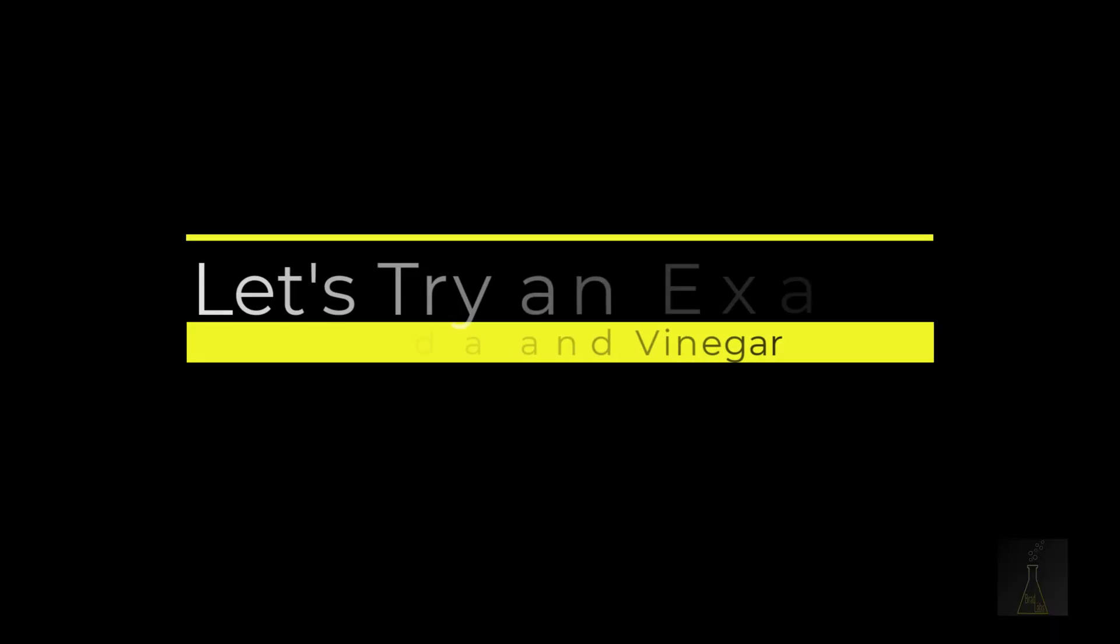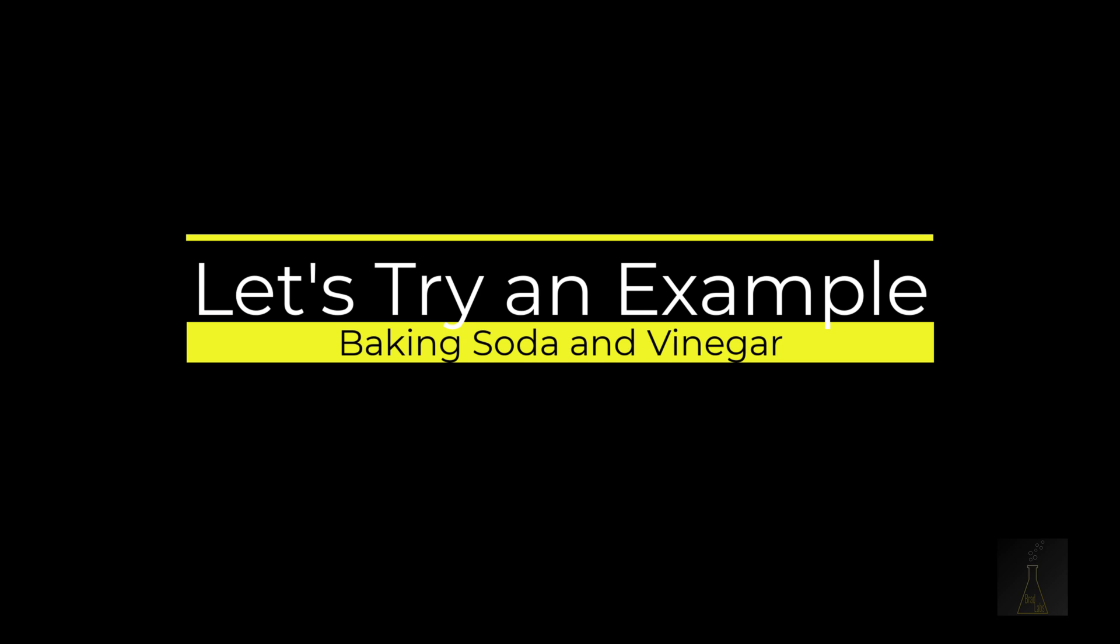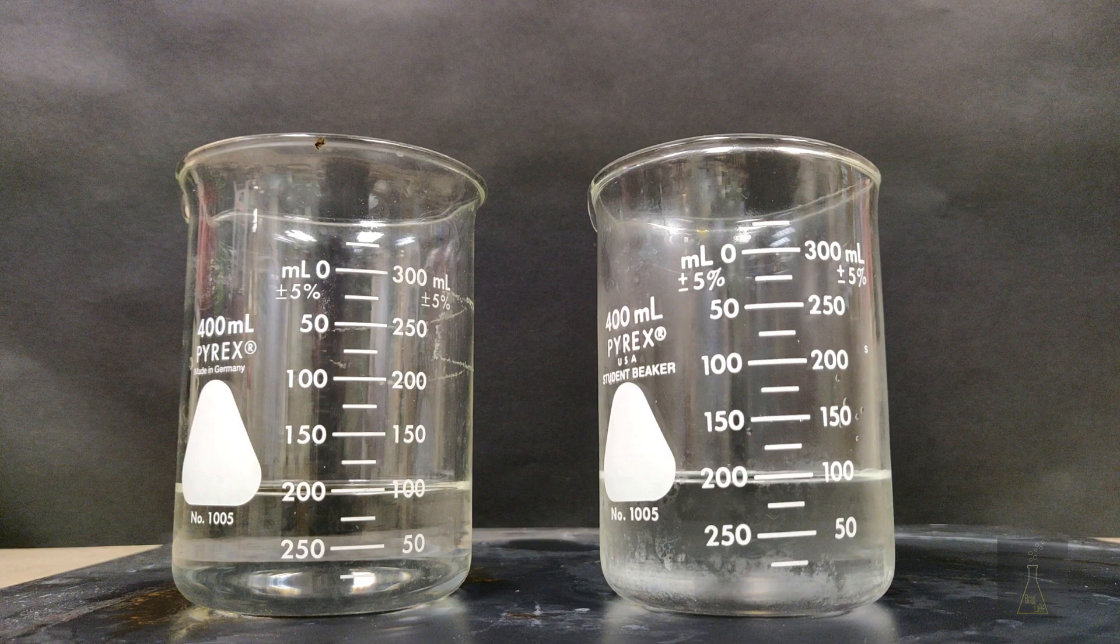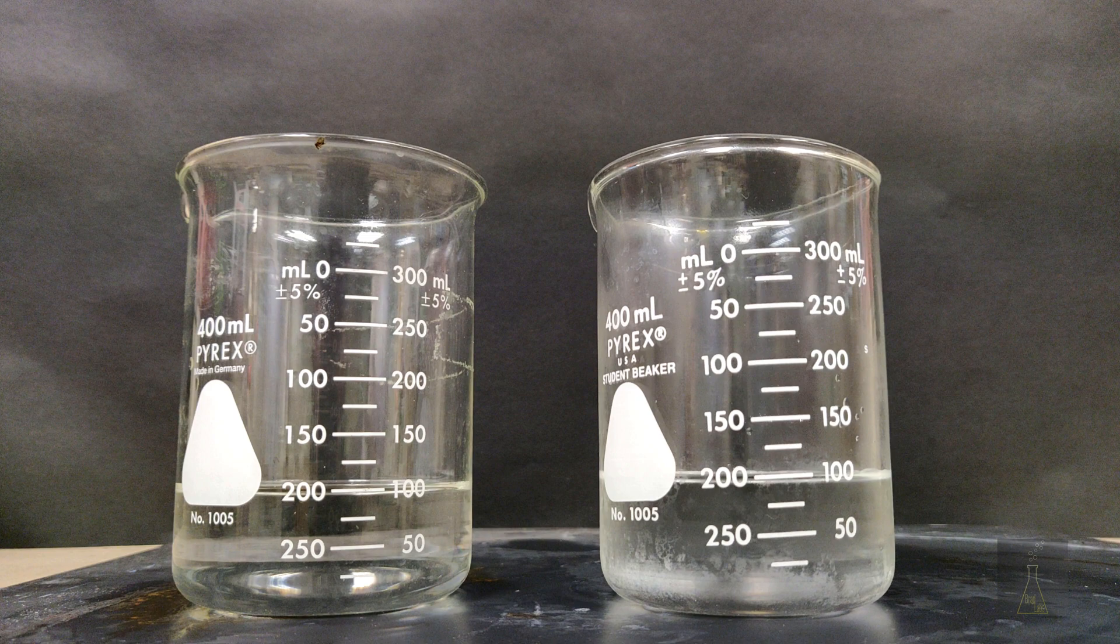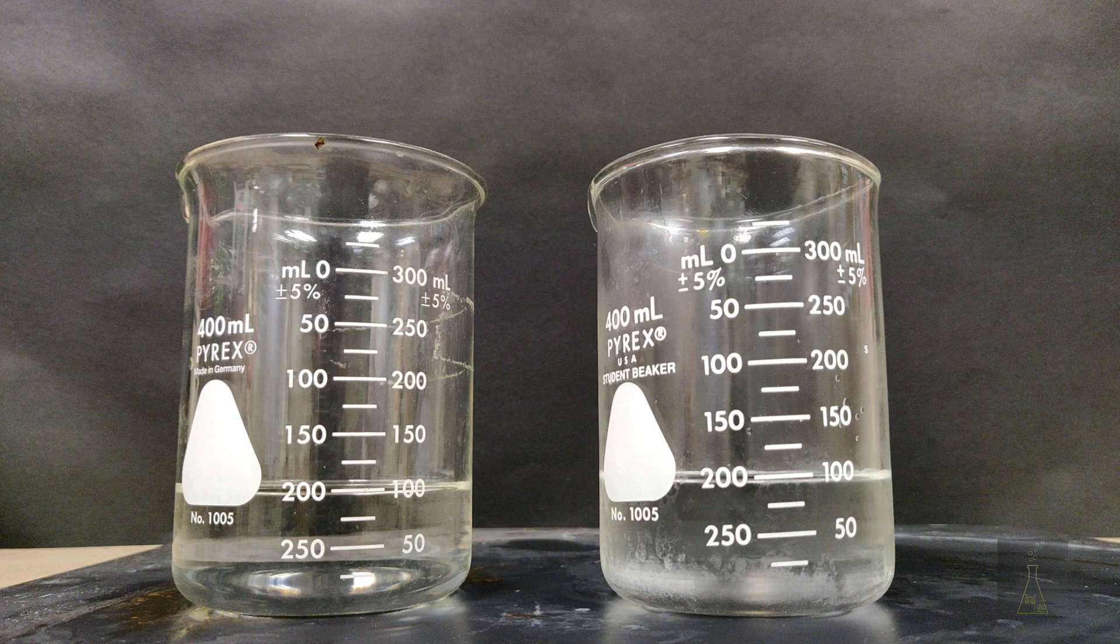Let's go through another example from beginning to end this time. Here I have another twist on the classic baking soda and vinegar. On the left, I have room temperature vinegar and on the right, I have chilled. The broad question that I'd like to answer is what differences in results will I see if I add baking soda to varying temperatures of vinegar? It's a good question, but it's not very specific.